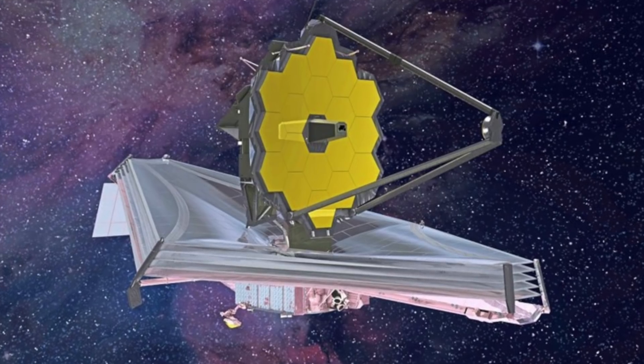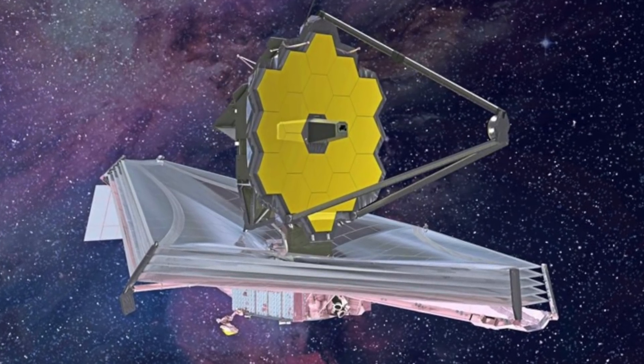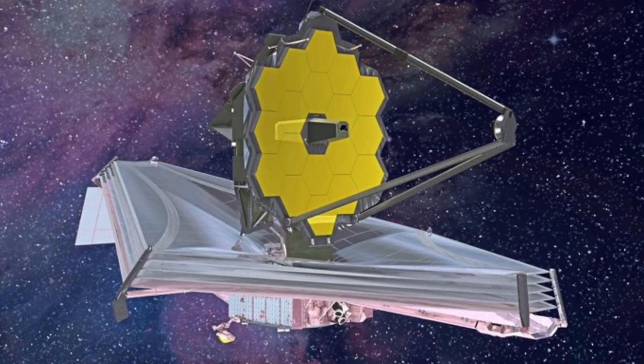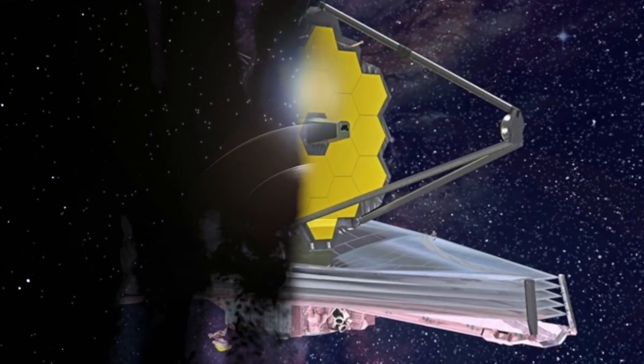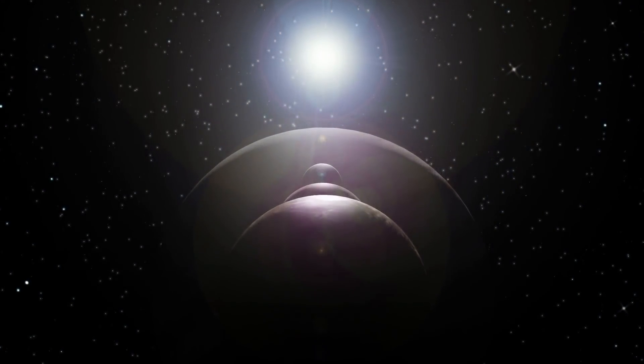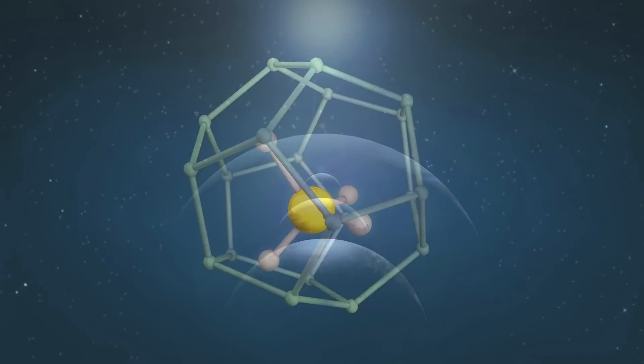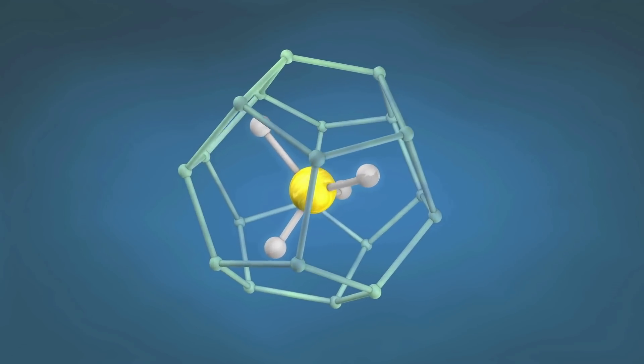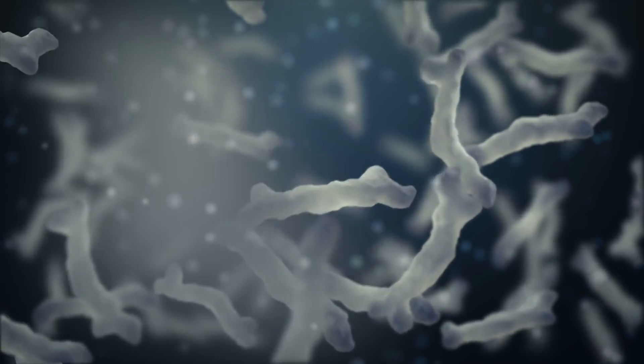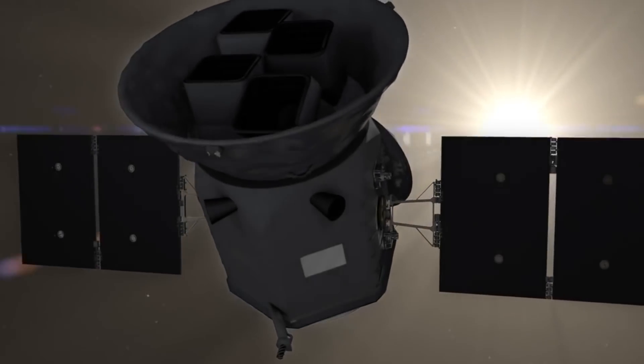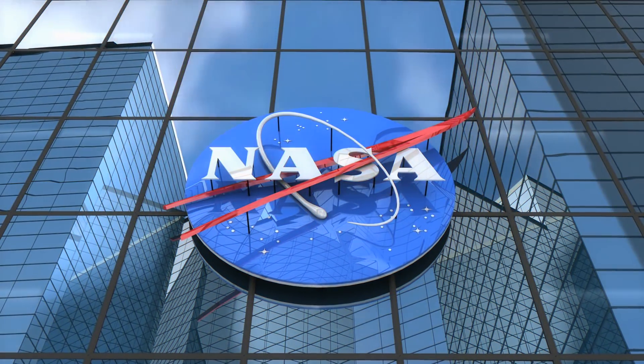The James Webb Space Telescope, or JWST, scheduled for launch sometime this decade, should have the precision to study many of these planets in more detail and possibly detect gases such as methane or oxygen in their atmospheres that are likely signs of life.